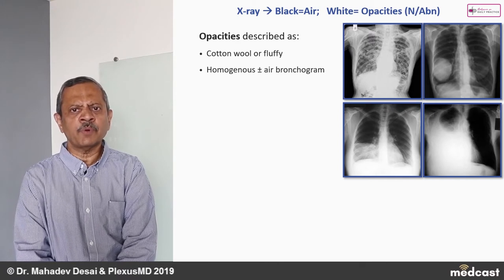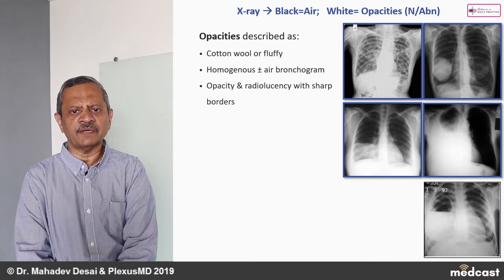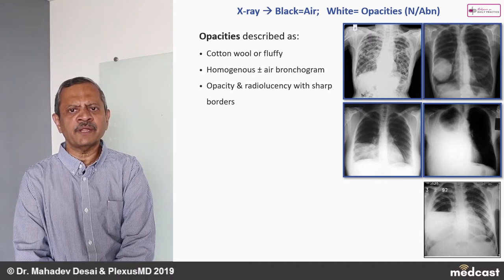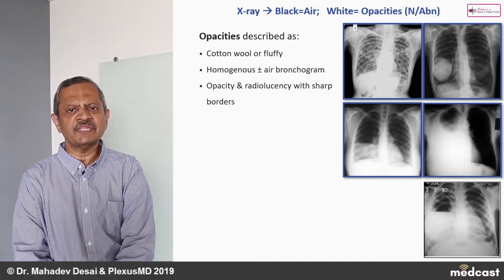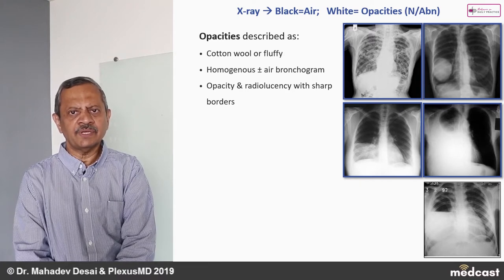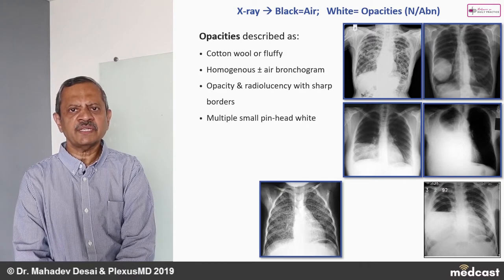Opacity with air bronchogram is indicative of consolidation or pneumonia. There may also be opacity and radiolucency with a sharp border separating the two shadows — this is usually seen when there is an air-fluid level. If it is inside the lung, it usually suggests abscess or a cavity. If outside the lung in the pleural cavity, it suggests hydropneumothorax.